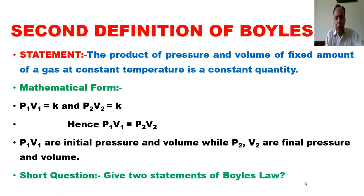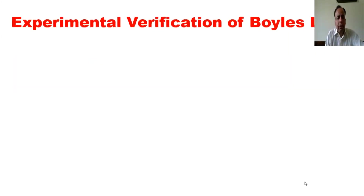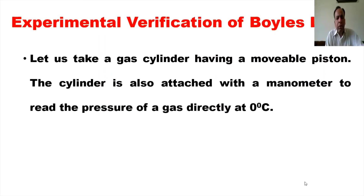There is a short question: give two statements of Boyle's Law. Now we will verify it with an experiment — the experimental verification of Boyle's Law. We take a gas cylinder having a movable piston; the cylinder is attached with a manometer to read the pressure of the gas directly at zero degrees Celsius.